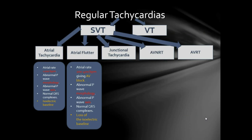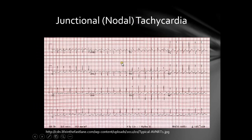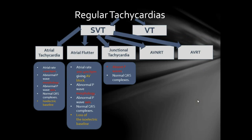The third type of SVT is junctional tachycardia, due to increased automaticity of the AV node. It is characterized by absent P waves, or the P wave could be immediately before or after the QRS complex, along with normal QRS complexes. In the example ECG, there is a regular rhythm with tachycardia of about 150 bpm, and no visible P waves before each QRS complex — simply a narrow complex tachycardia.